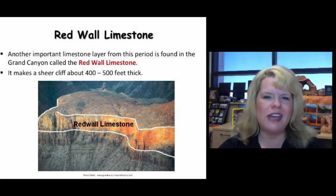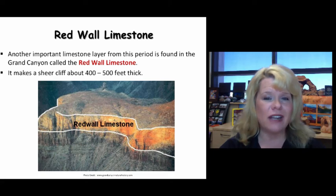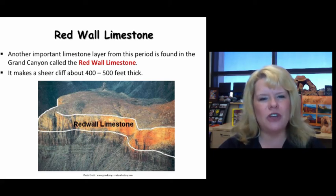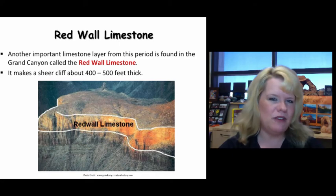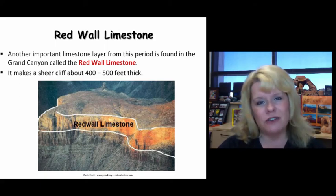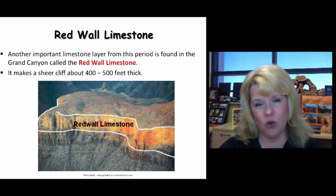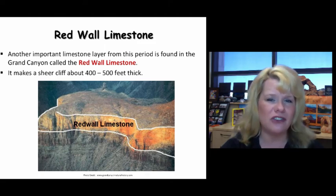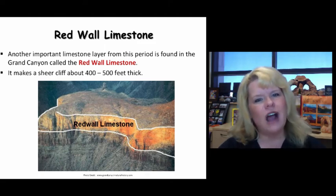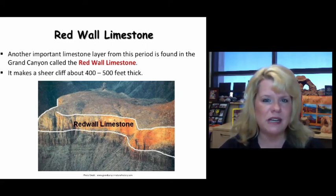A famous geologic formation from the Mississippian is the Redwall Limestone, one of my personal favorites in the Grand Canyon. This limestone was deposited during the Mississippian and represents exactly the depositional environment I showed you from the Bahamas. What makes it special in the Grand Canyon, besides being a fossiliferous Mississippian limestone full of crinoids, is how thick the unit is, which is very indicative of the same correlation to the Bahamas.